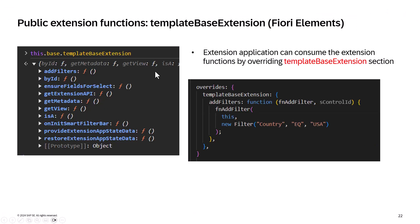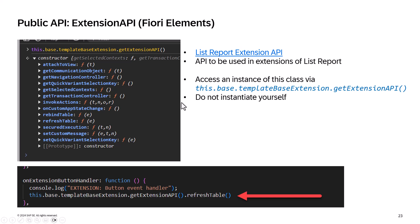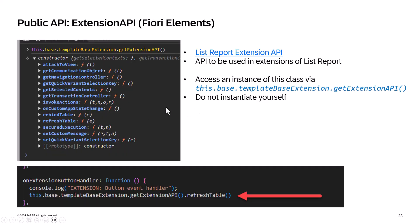Along with controller framework extensions and template-based extensions — both available only for Fiori Elements apps — you can also use the extension API. The extension API is a rich set of utility methods to interact with list report and object page components, models, and actions, allowing developers to programmatically interact with the UI or trigger framework-specific behaviors.